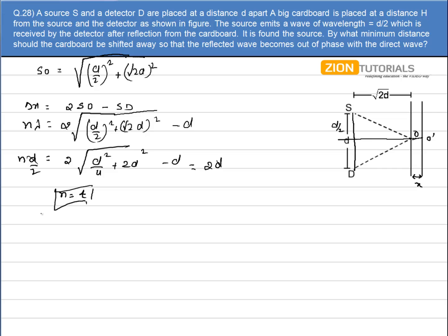We know that path difference in case of destructive interference is given by (2n+1)λ/2. So in this case the path difference will now become 2 times SO' minus SD. The value of SO' will be equal to under root of (D/2)² plus (√2D + x)² minus SD, that is the value of D.